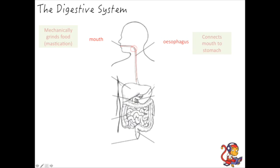The food goes down through the esophagus into the stomach and here is where it will start to get churned. Also in the stomach there's hydrochloric acid which kills any bacteria that's on the food, and the food will start to get churned and broken down by the muscular contractions that occur in the stomach.